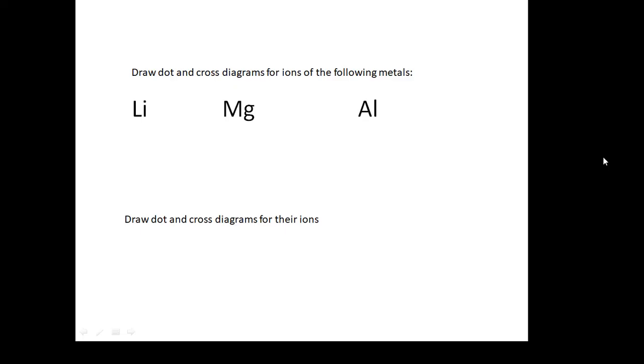Draw dot and cross diagrams for the ions of the following metals. Figure out what group they're in and do a dot and cross diagram for each of them.